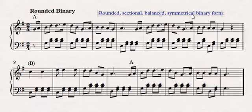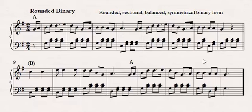So we have a rounded, sectional, balanced, symmetrical binary form. I know this seems like a lot of words. If you just make a few flashcards, you can learn them pretty quickly, and I think they're fairly easy to apply. So go forth and label binary forms.